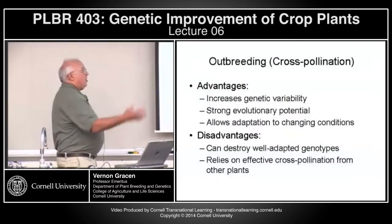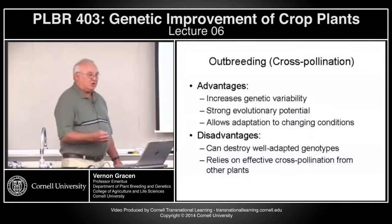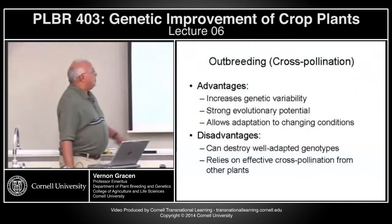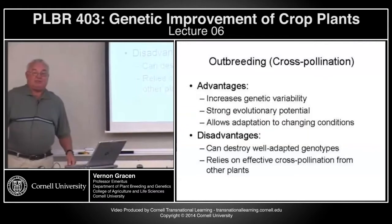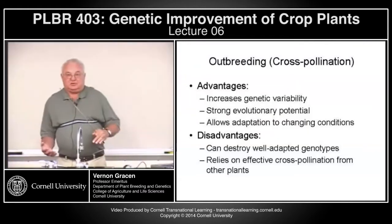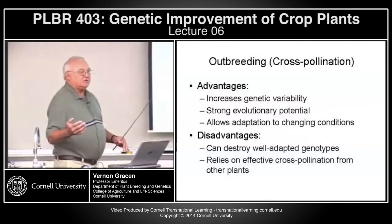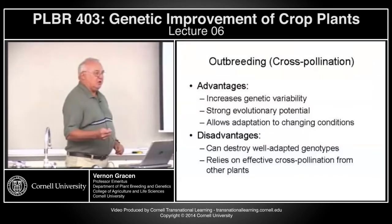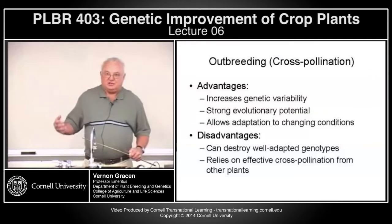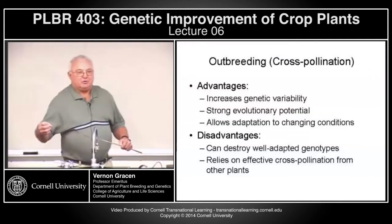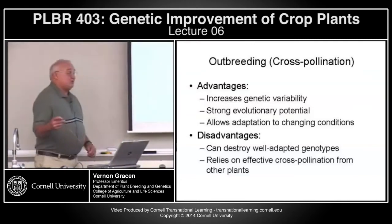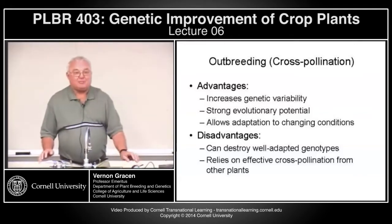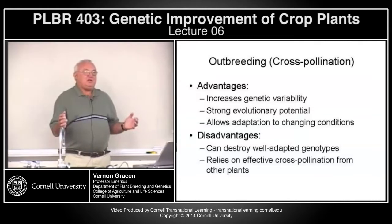The alternative to inbreeding is cross-pollination or outbreeding. It increases genetic variability, has strong evolutionary potential, and allows adaptation to changing environments. The disadvantage is it can — and will — destroy well-adapted genotypes. You can produce an ideal heterozygous plant by cross-pollination, but maintaining it is the challenge.